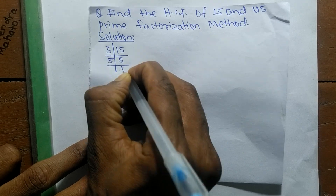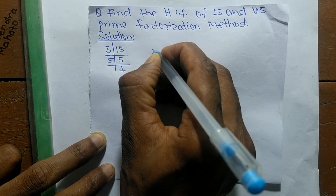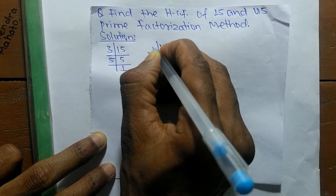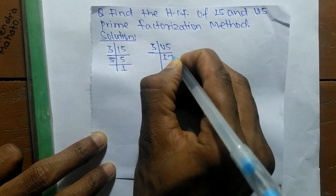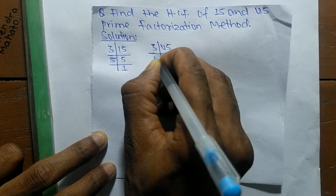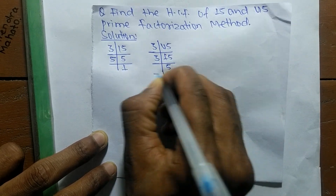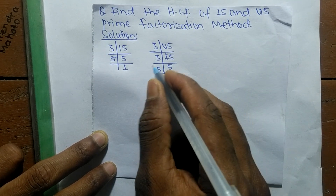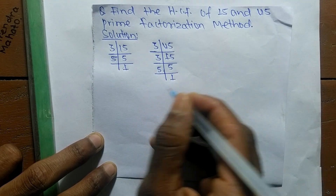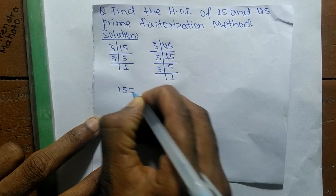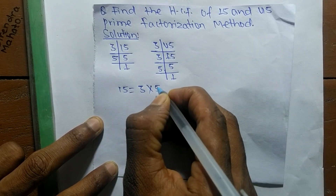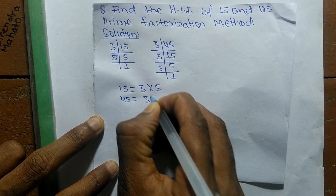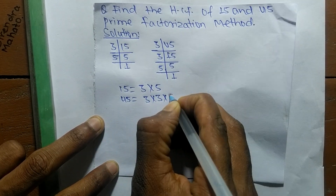5 times 1 equals 5. In the same way, the prime factors of 45 are: 3 times 15 equals 45, 3 times 5 equals 15, and 5 times 1 equals 5. From these prime factors we can write: 15 = 3 × 5, and 45 = 3 × 3 × 5.